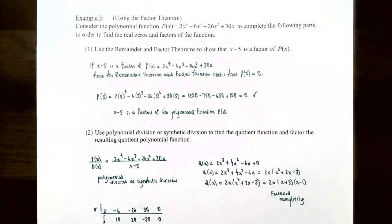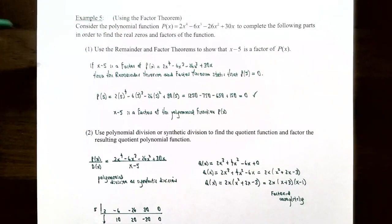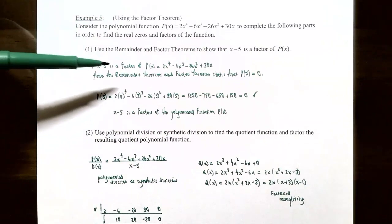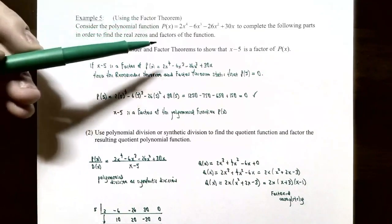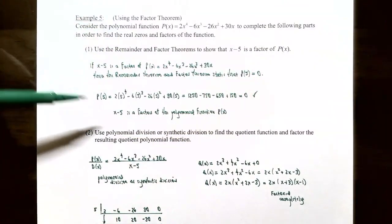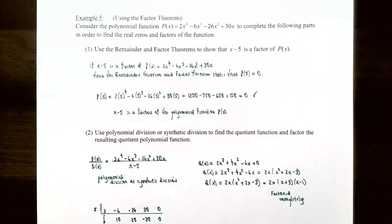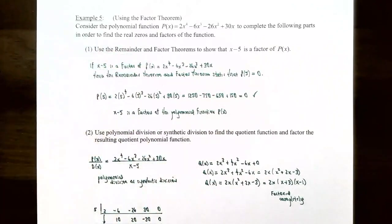Example 5, using the factor theorem. Consider P(x) = 2x⁴ - 6x³ - 26x² + 30x. Part 1: use the remainder and factor theorems to show x - 5 is a factor. By the remainder theorem, evaluate P(5): 2(5⁴) - 6(5³) - 26(5²) + 30(5) = 0. Since P(5) = 0, by the factor theorem x - 5 is a factor of P(x).